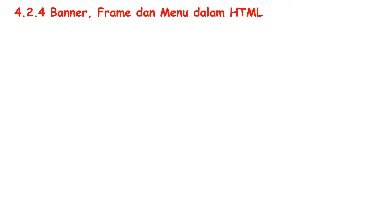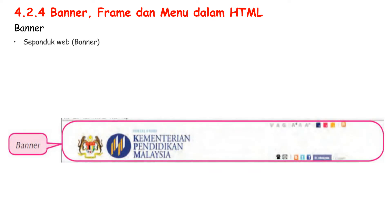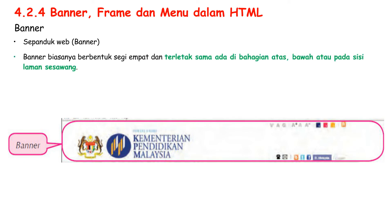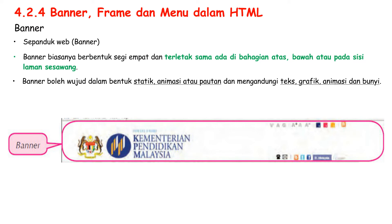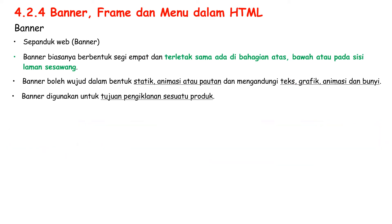Let us understand them one by one. First, Sepandok web — Banner. Banners are usually rectangular in shape and are located either at the top, bottom or on the side of the Laman Sesawang. Banners can exist in the form of static, animations or links and contain text, graphics, animations and sound. Banners are used for advertising a product.